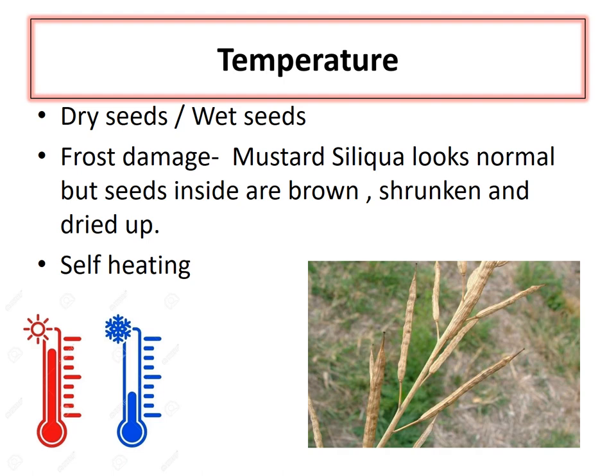The next thing is self-heating, which is due to the moisture content of stored crops. When seeds are in storage and moisture content increases, there are chances of respiration. When this respiration takes place, there are changes in the fatty acids, especially of oily seeds, and also in the biochemical constituents, which can further attract pathogens.